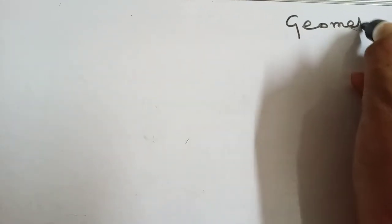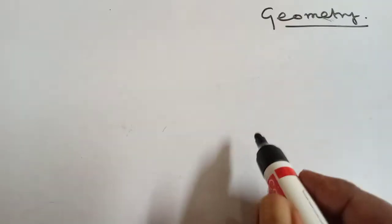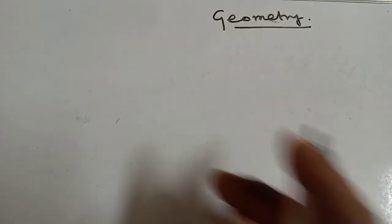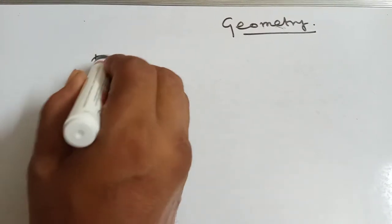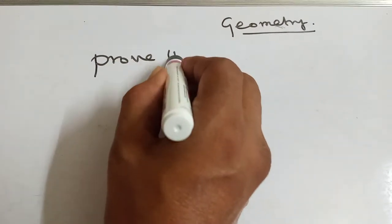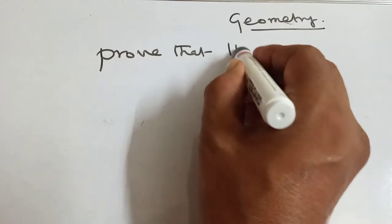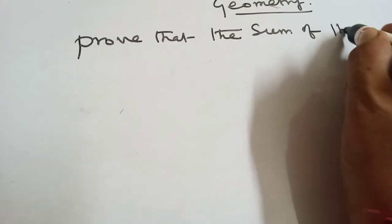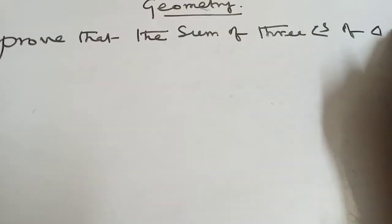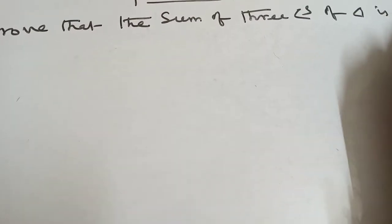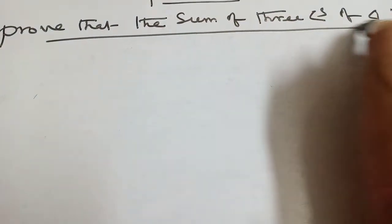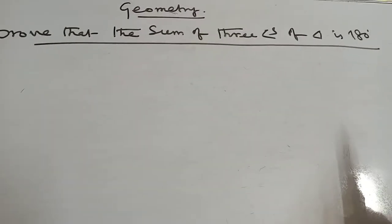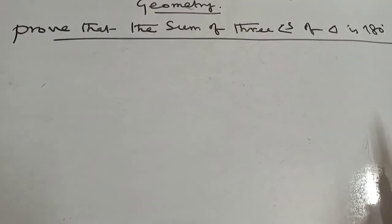GeoMitti. Prove that the sum of 3 angles of a triangle is 180 degrees.